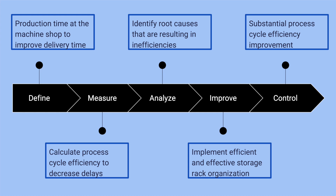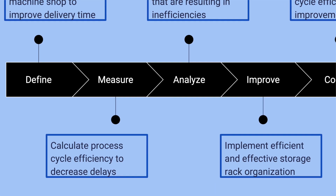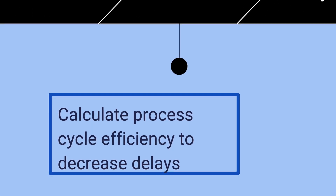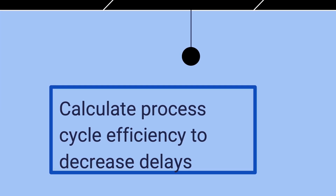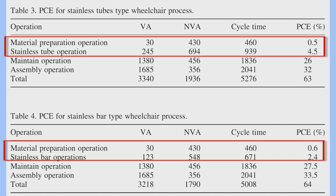The second step of the DMAIC process is to measure errors and process performance and quantify problems. The team chose to measure process cycle efficiency, or PCE, to determine whether production processes were consistent with lean methods. Additionally, they collected information about the machine shop layout. Their findings indicated that the process cycle efficiency of material preparation and stainless tube operation were less than 5%.